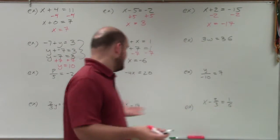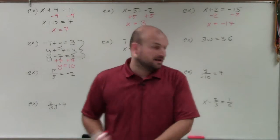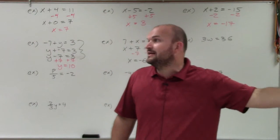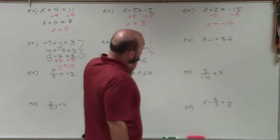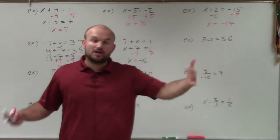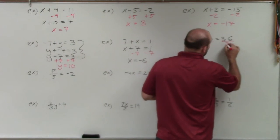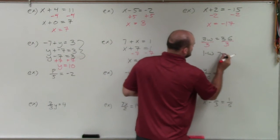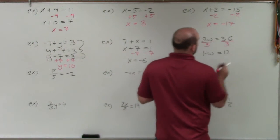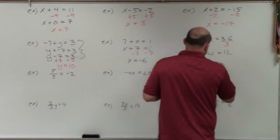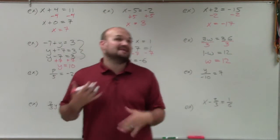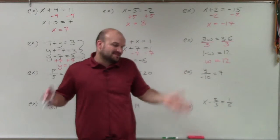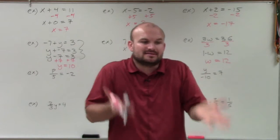Now we're done with adding and subtracting, and we're getting into multiplication and division. Remember inverse operations: to undo multiplication, you divide; to undo division, you multiply. We look at our variable and say our variable is being multiplied by 3. So we divide by 3 on both sides — 3 divided by 3 goes to 1, so 1 times w equals 36 divided by 3, which is 12. So w equals 12. They don't really cancel out — they divide to 1. For the next example, my variable is being divided by 5, so to undo division I multiply by 5 on both sides.